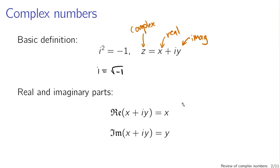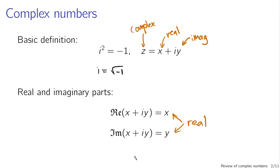As for notation for extracting the real and imaginary parts, mathematicians typically use a calligraphic font to indicate the real part or imaginary part of x plus iy, and that just pulls out x and y. Note that both of these are real numbers. When you pull out the imaginary part, you get y — you don't get iy.